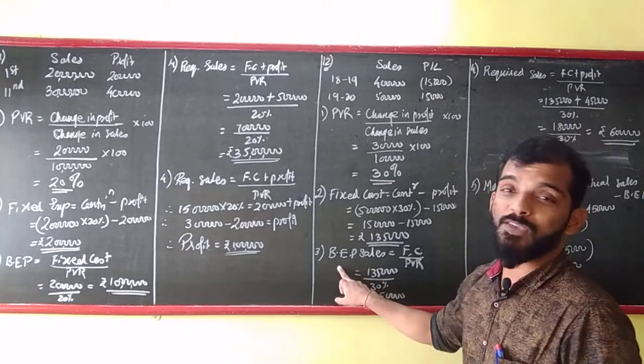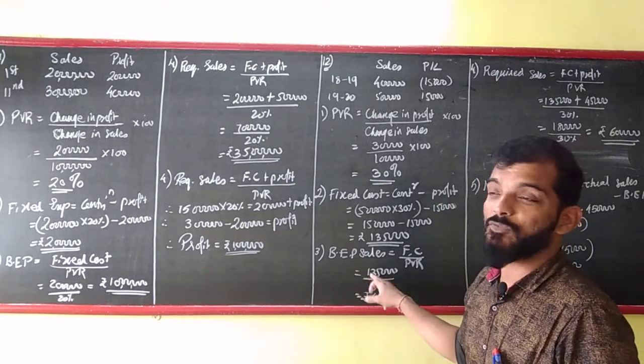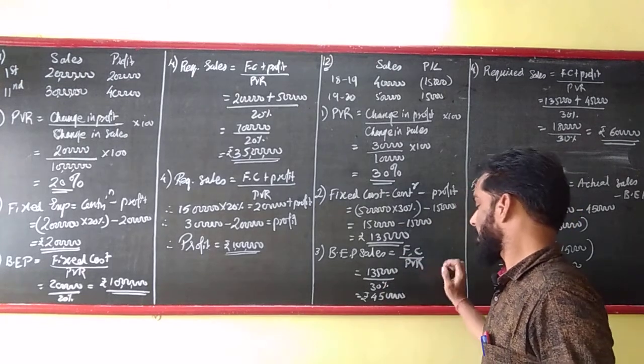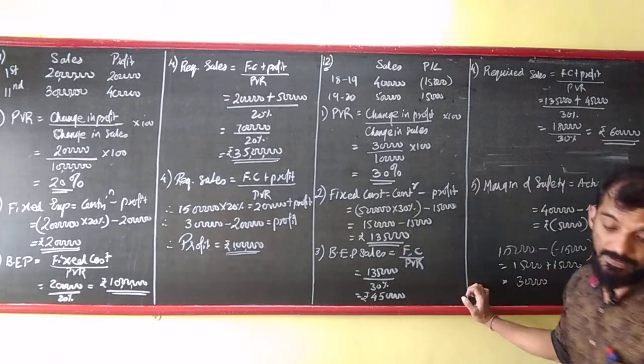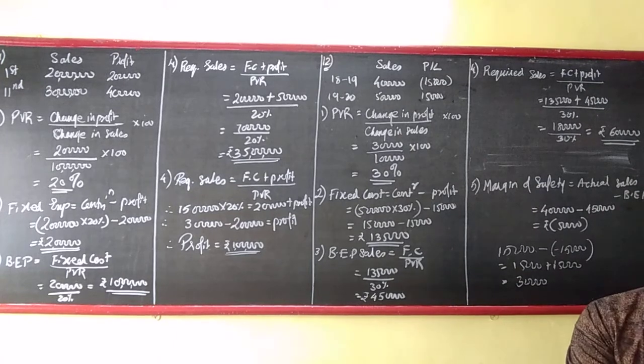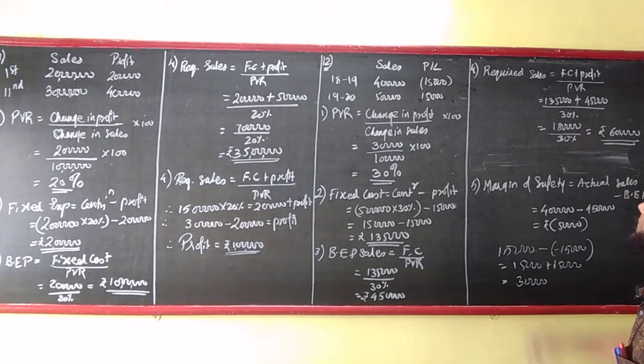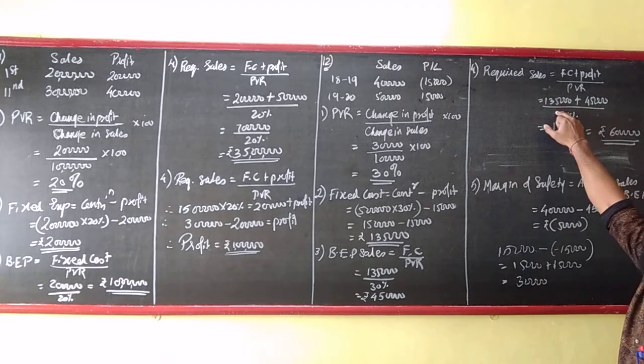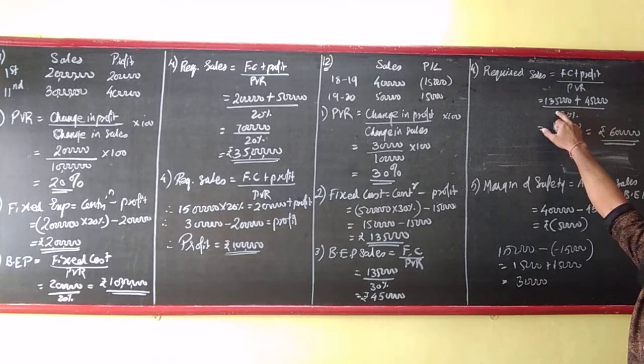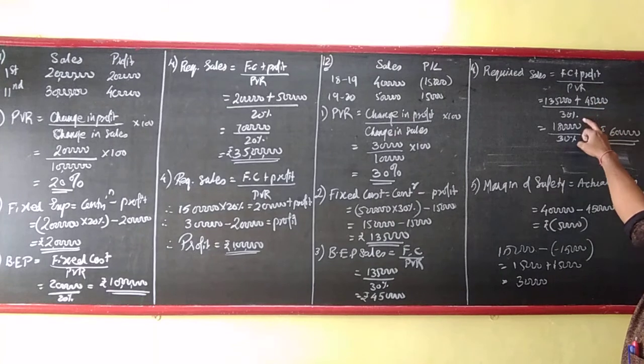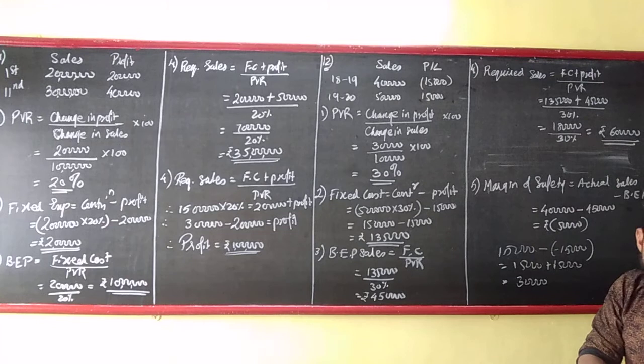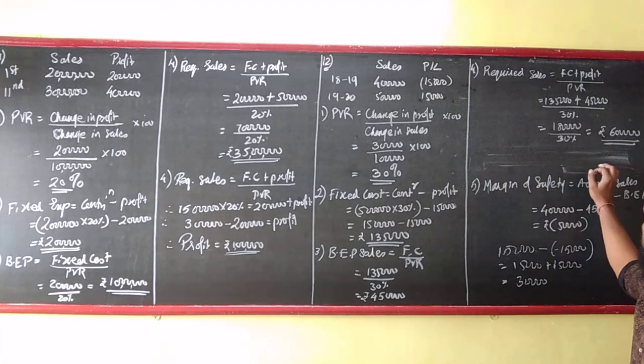Then BEP is fixed cost upon PVR, so fixed cost is 135, PVR is 30%, so 4 lakh 50,000. Then they are asking sales to earn profit of 45,000. Fixed cost plus profit upon PVR, 135,000 is my fixed cost, profit they are telling me 45,000 upon 30% that comes to 6 lakhs.